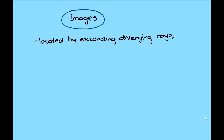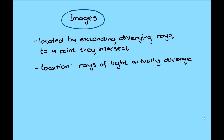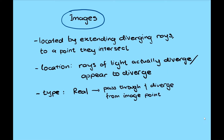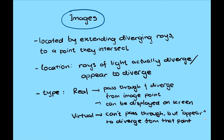The formed image is always located by extending diverging rays back to a point at which they intersect — either at the point from which the rays of light actually diverge, or at a point from which they appear to diverge. We can categorize the type of formed image into two. First, real image: if the ray of light passes through and diverges from the image point, this can be displayed on a screen. Second, virtual image: when the ray of light cannot pass through but appears to diverge from that point, and a virtual image cannot be displayed on a screen.